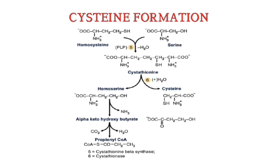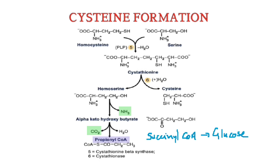Finally, homoserine undergoes deamination and decarboxylation to form propionyl CoA. This enters the TCA cycle and is converted to succinyl CoA, which can be used for gluconeogenesis.